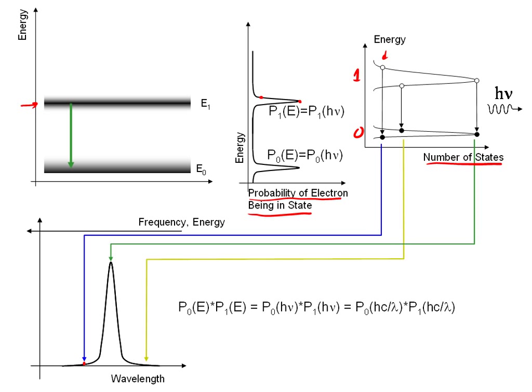And so this distribution of probabilities or number of states, in fact, leads to a distribution of wavelengths. And this distribution of wavelengths, the shape of the light we measure coming out in fluorescence, is called the line shape.